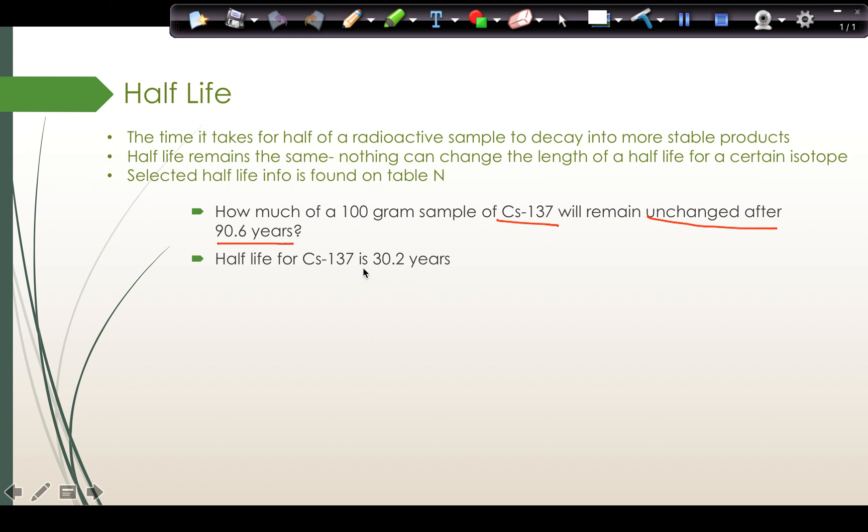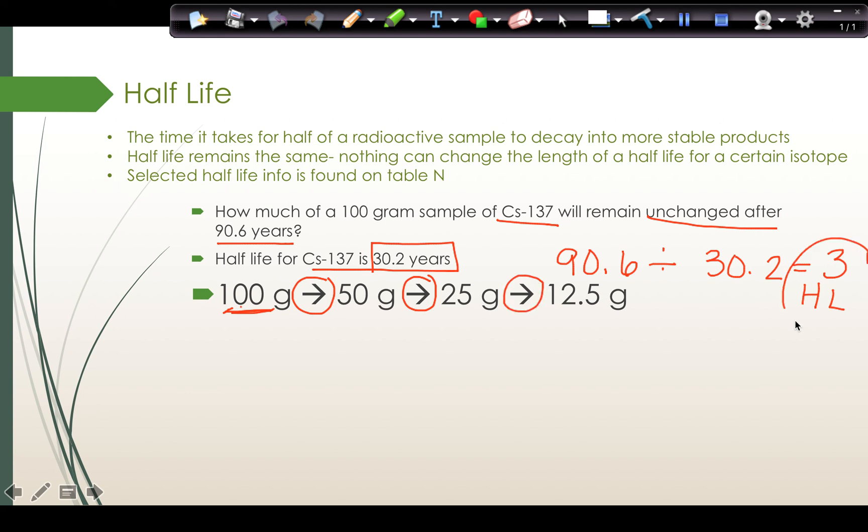You're going to use table N to look up the time for one half-life and use this process. On table N, it says that cesium-137 has a half-life of 30.2 years. So 90.6 divided by 30.2, I get an answer. Three half-life periods have gone by if we allow 90.6 years to go by. If three half-life periods are going to go by, that means our 100-gram sample divides in half one, two, three times. Every time a half-life period goes by, the amount of unchanged isotope divides in half. We have one half-life making it be 50 grams left over. The second half-life gets us to 25 grams left over. The third half-life period gets us to 12.5 grams left over.